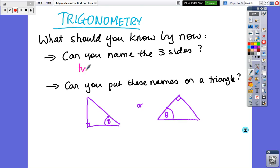Ok, the three sides you should have named were the hypotenuse, the opposite, and the adjacent. So they're the three names that we put on trigonometry, for triangles.